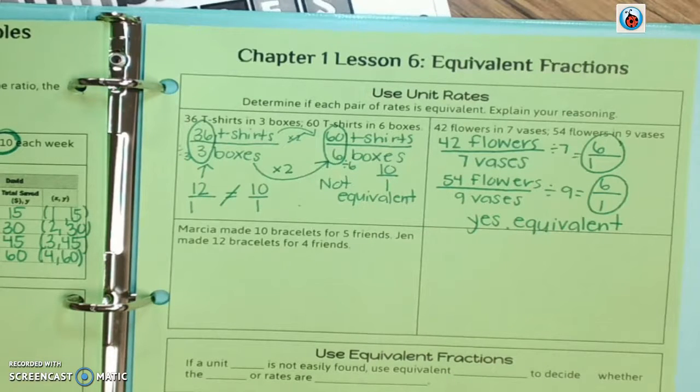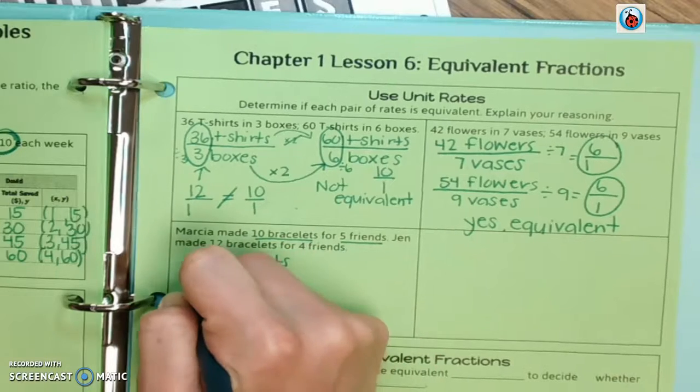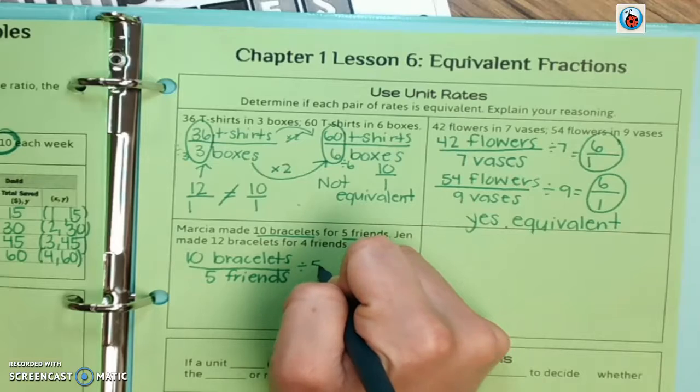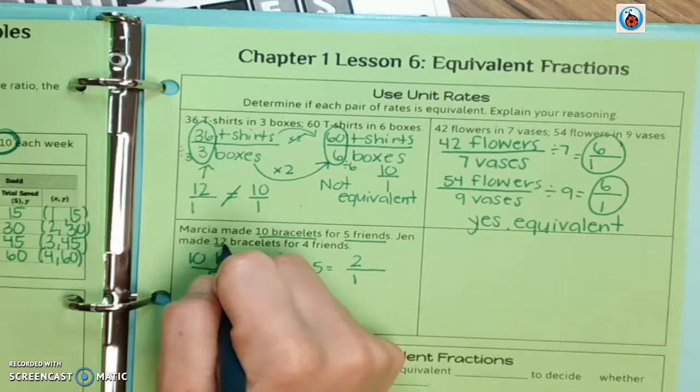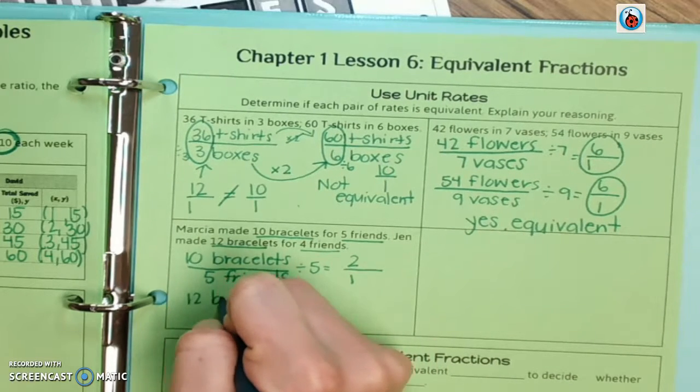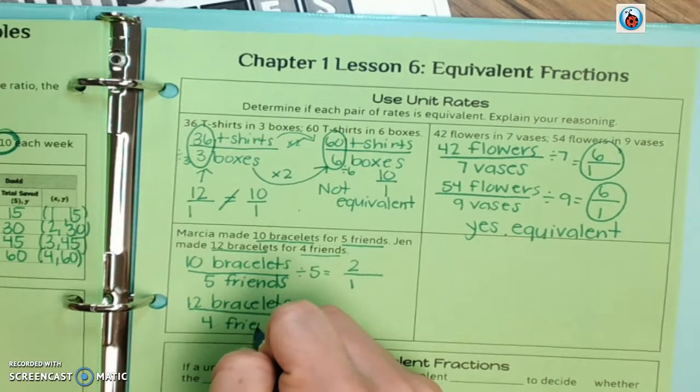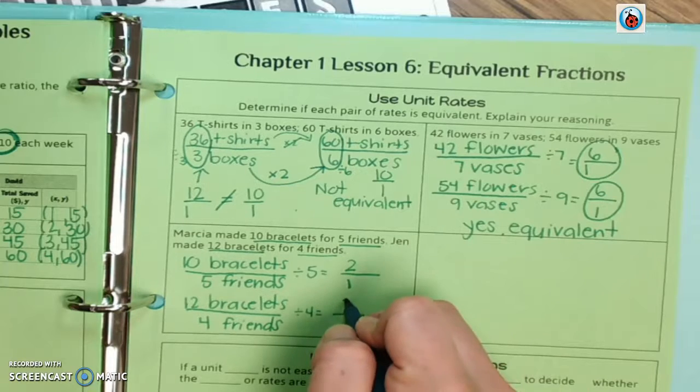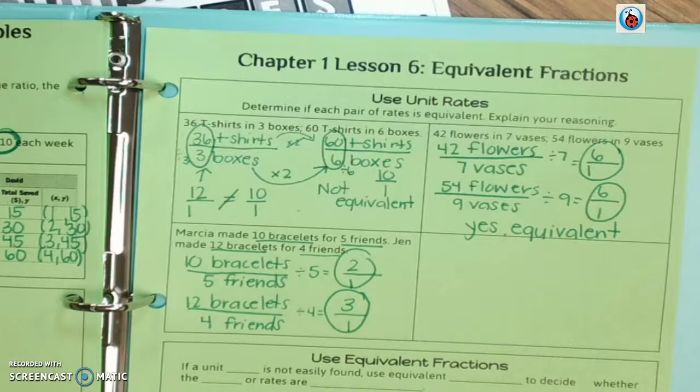This next one says Marsha made 10 bracelets for 5 friends. So we're going to put 10 bracelets on top and 5 friends on the bottom. It's a unit rate, so we're dividing by the bottom number. 10 divided by 5 is 2. And then Jen made 12 bracelets for 4 friends. 12 divided by 4 is 3. So if we look at the unit rates, we have 2 over 1 and 3 over 1. Are those equivalent numbers? No, they are not. So we're going to write not equivalent.